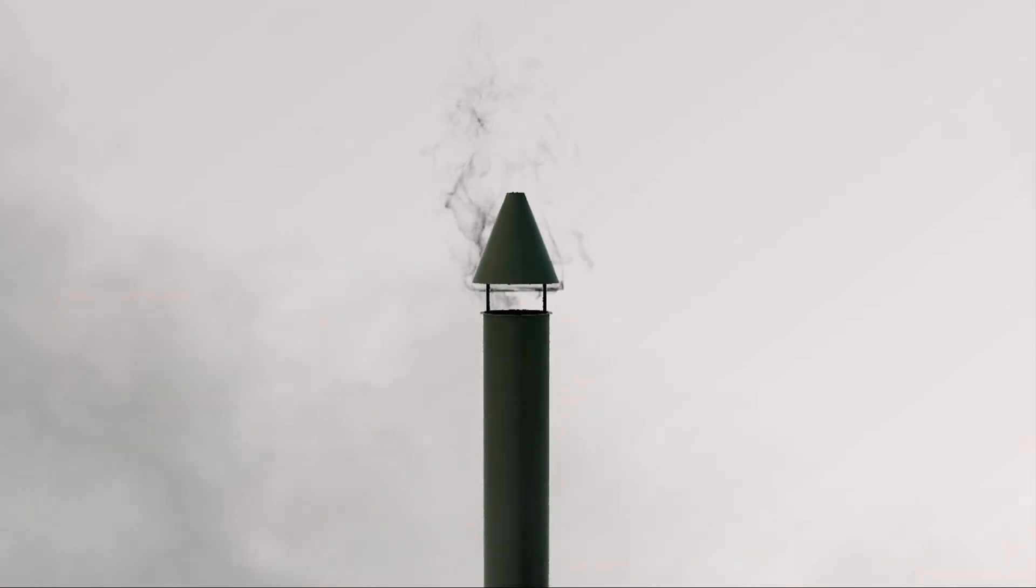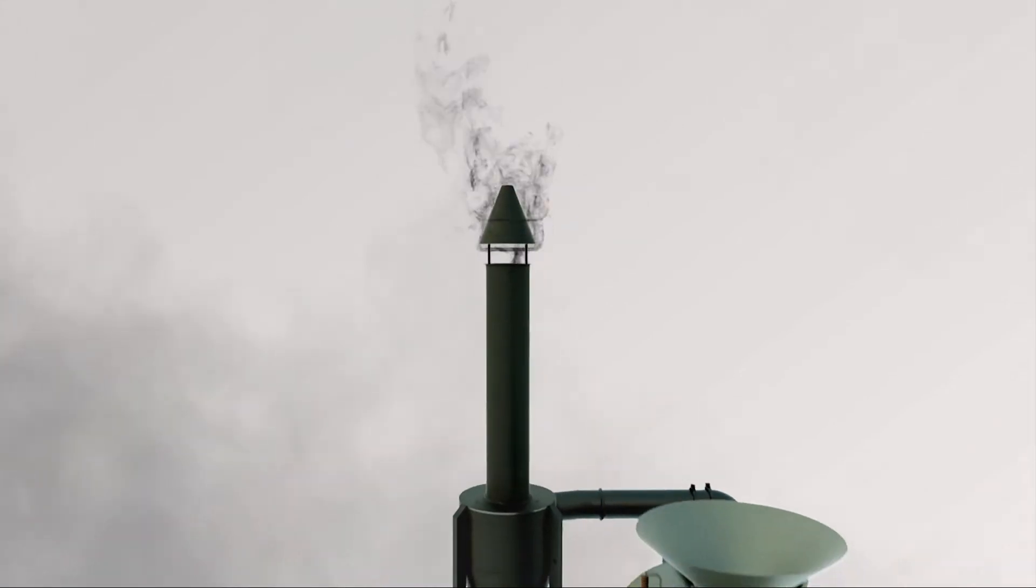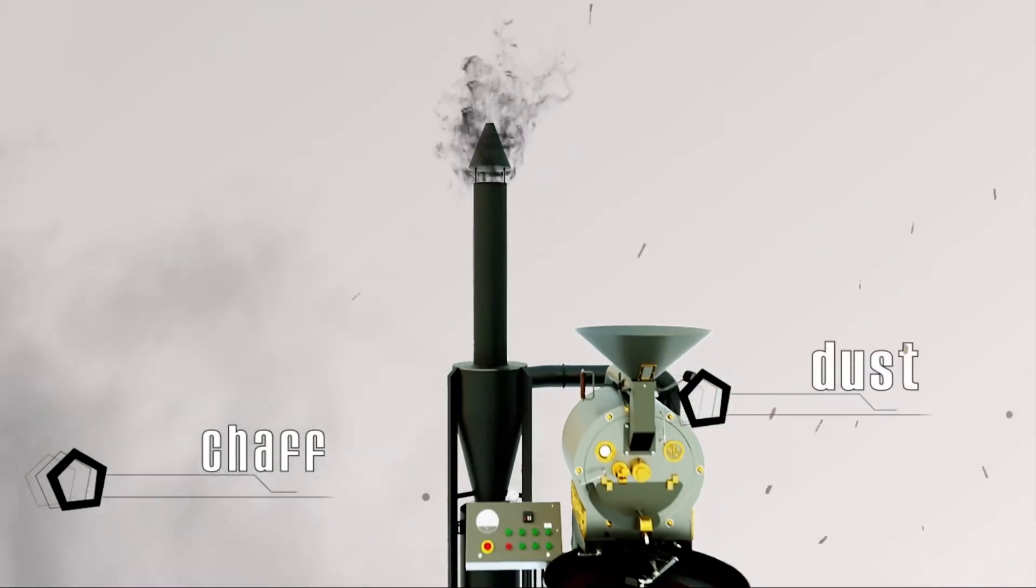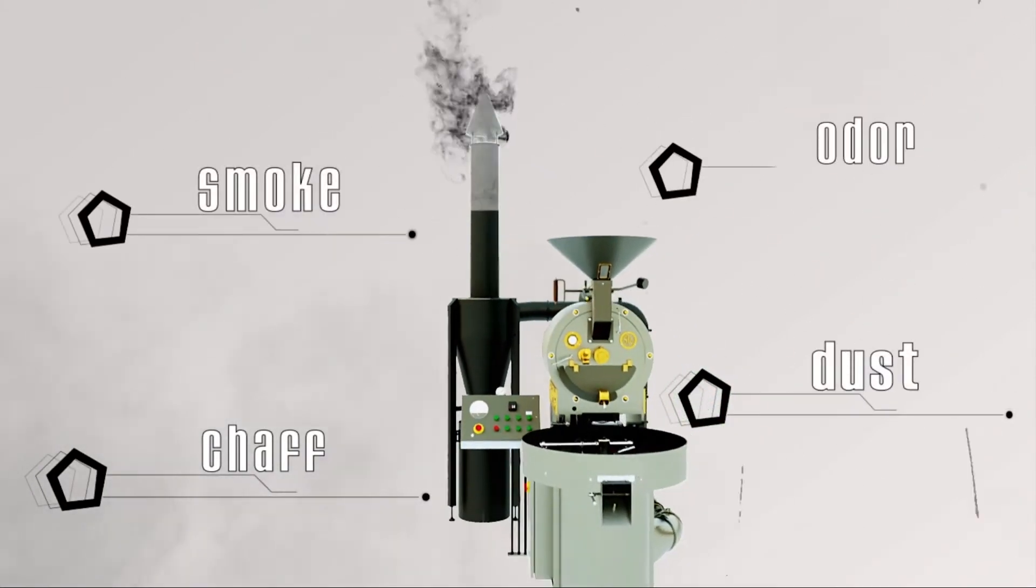Your coffee roaster exhaust contains chaff and dust, smoke and odor, VOCs, and CO2 which can offend your neighbors and hasten climate change.